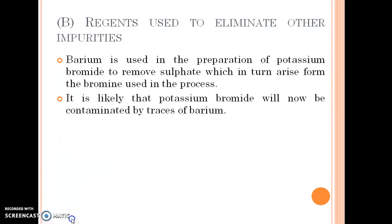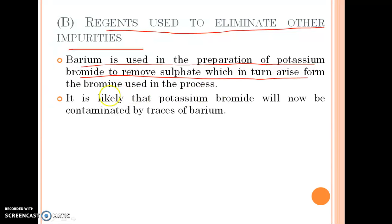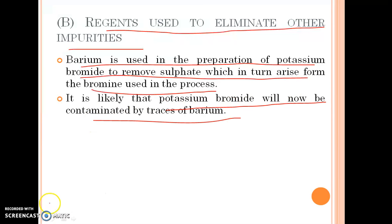Next type is reagents used to eliminate other impurities. In this case, barium is used in the preparation of potassium bromide to remove sulphate, which in turn arises from the bromine used in the process. It is likely that potassium bromide will now be contaminated by traces of barium.